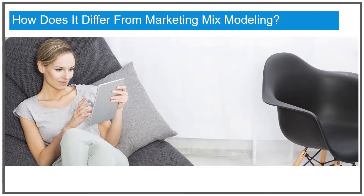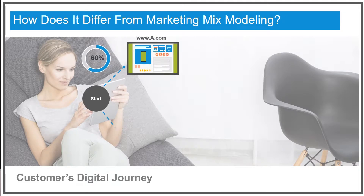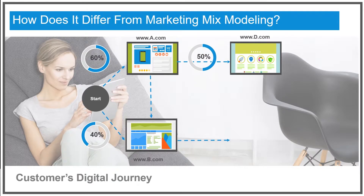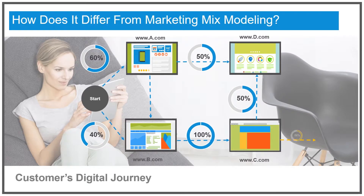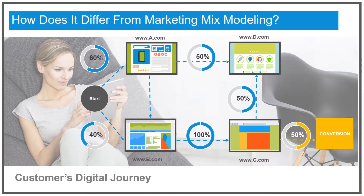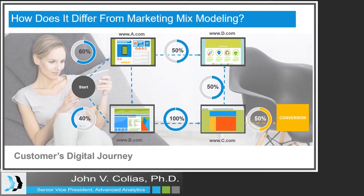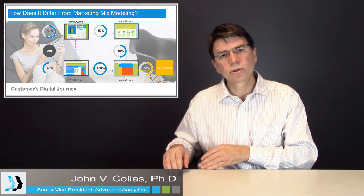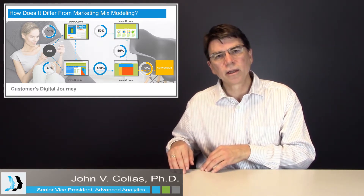The second type of attribution modeling involves a different technique which looks at the customer journey — from investigating a product, to exploring alternatives, to considering different alternatives, to finally making a purchase. For example, someone who buys a book on Amazon might visit various websites on the way to that final visit at Amazon to make the purchase. This kind of attribution modeling measures the relative contribution of the earlier touch points to the final sale at the end of the customer journey.